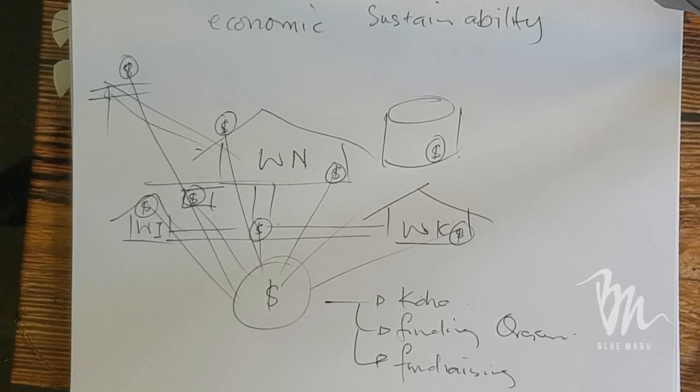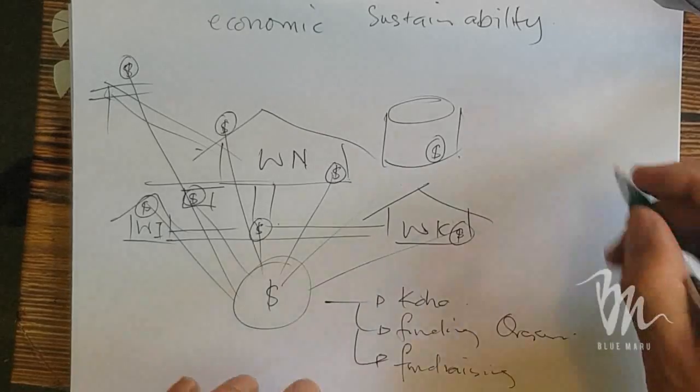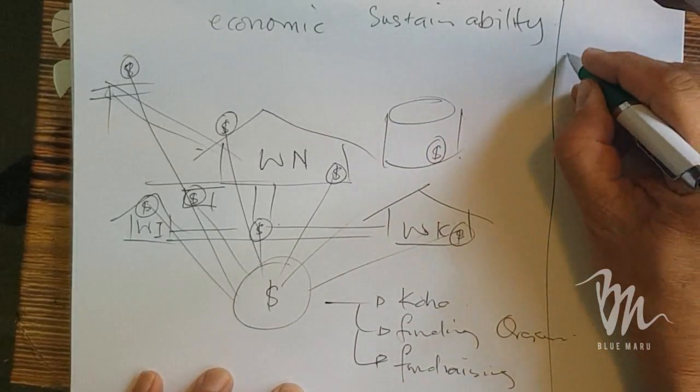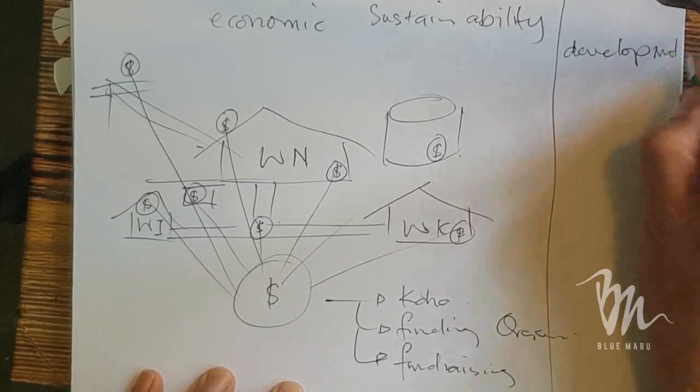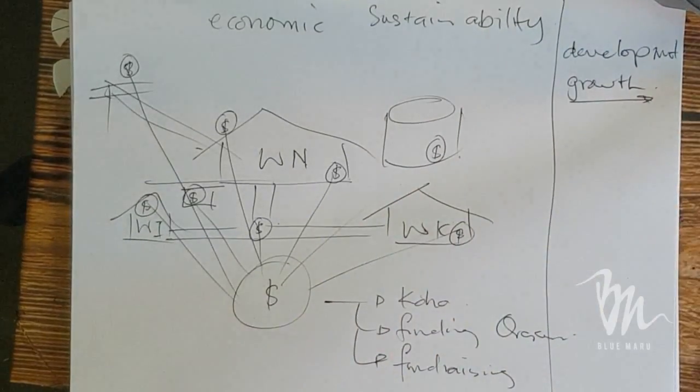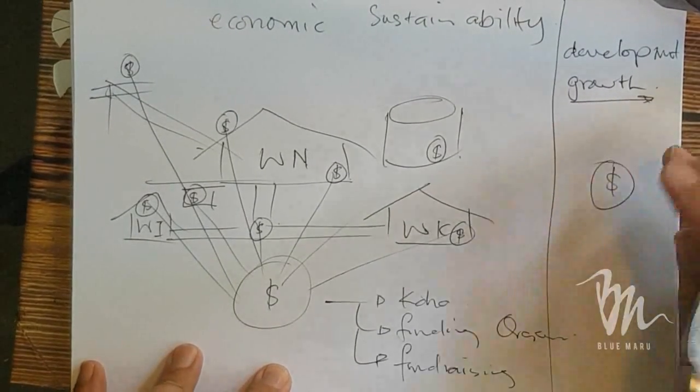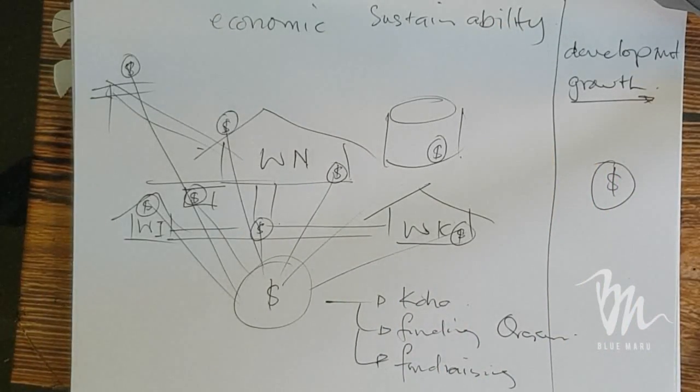I just want to leave that for now eh whānau, because this is a key model here. This is only talking about what we currently have. So remember, there's our development that we want to do and growth going forward. Now there's a cost associated with that, but we're just looking at the cost to deliver the marae currently as it is.